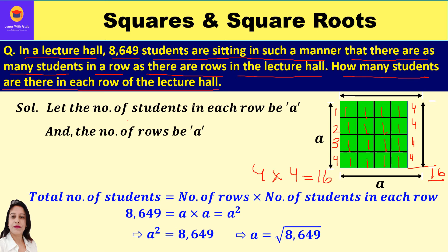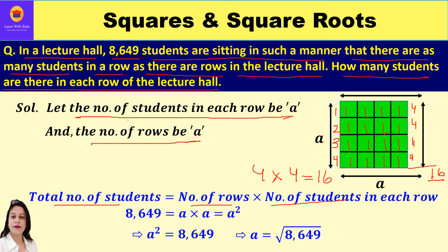So a into a is equal to a squared. We assume: let the number of students in each row be a, and the number of rows be a as well. Total number of students = number of rows × number of students in each row = a squared, which is given as 8649.